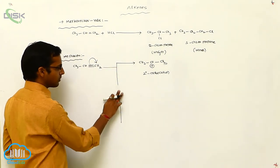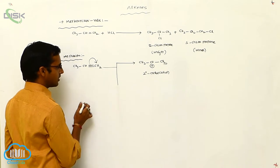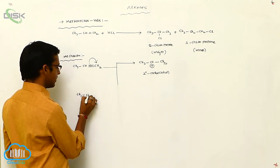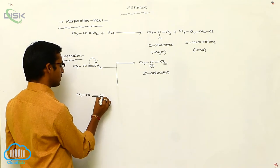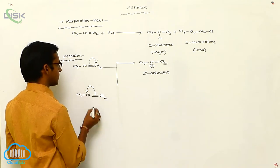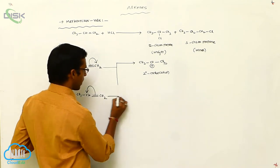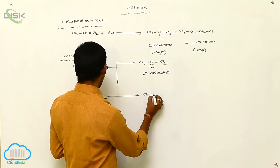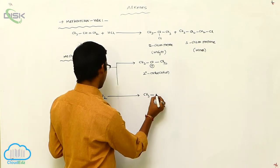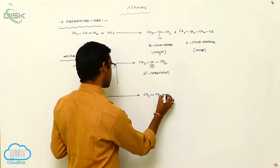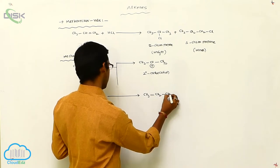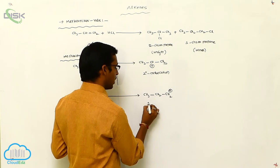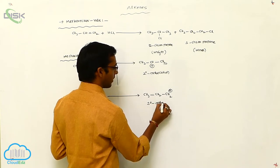Now applying the same mechanism for the second cleavage of CH3CH=CH2 — the cleavage is in the other direction. Abstracting one proton gives CH3CH2CH2+, which is your primary carbocation.